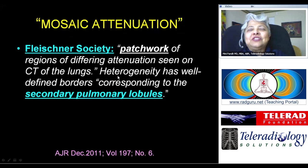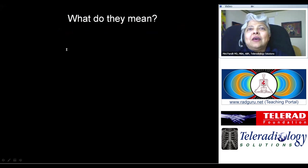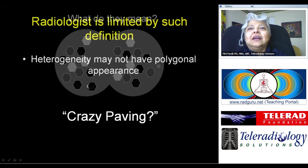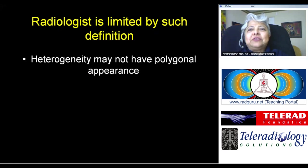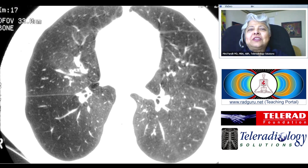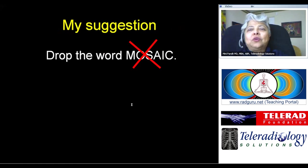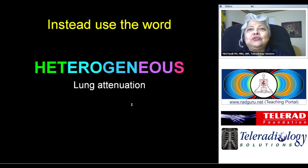Such heterogeneity has well-defined borders corresponding to the secondary pulmonary lobules. Do they mean polygonal shaped areas of differing lung attenuation, previously known as crazy paving? Well, the radiologist is actually limited by such a definition because the heterogeneity may not have a polygonal appearance. Look at this example — the lungs are heterogeneous, there are no polygonal shaped areas. In fact, it is sub-segmental, even segmental and lobar in distribution.